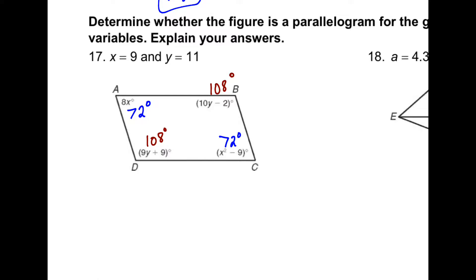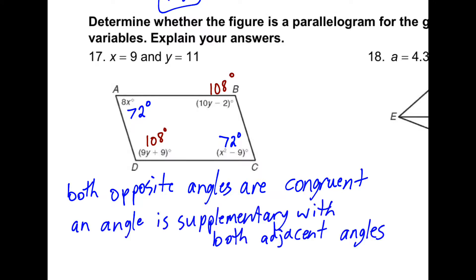For 17, we substitute in for x and y with the given values. And we can conclude that this is a parallelogram based on one of two conditions. First, that both opposite angles are congruent. Or secondly, that an angle is supplemented with both adjacent angles. But just the first one would have been fine.